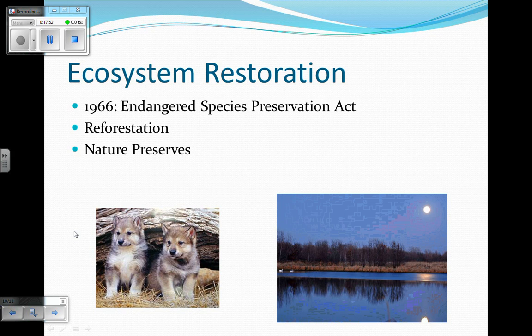Another way to restore an ecosystem, such as a forest, is reforestation. Reforestation depends on research in succession — the series of changes an ecosystem goes through when it's first beginning or after some kind of disturbance. If we have disturbed an ecosystem, we know what happens naturally to restore it, and we can mimic that by planting the right kinds of plants or introducing the right kinds of animals. We also have nature preserves — areas specifically set aside to preserve a species, where they can be safe and humans cannot harm them. There's a nature preserve in South Minneapolis, the bird sanctuary by Lake Harriet, where birds can go and not be harmed.